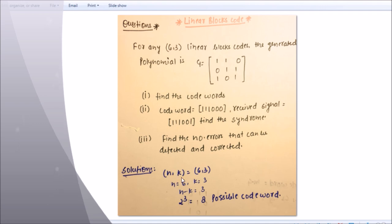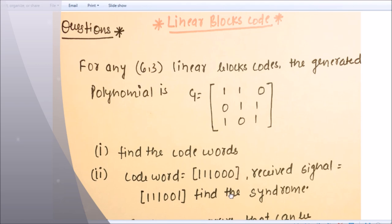So let's see the solution. Here n,k equals 6,3, so n equals 6, k equals 3, and n minus k equals 3. 2 raised to the power 3 equals 8 possible codewords. We have 8 possible codewords. I am zooming it so you can see it clearly.